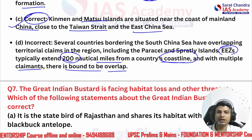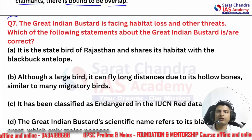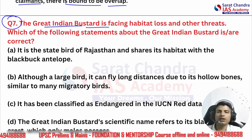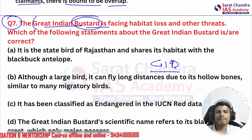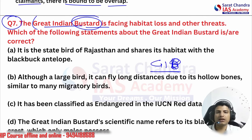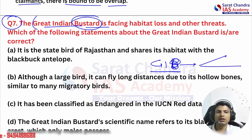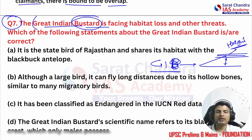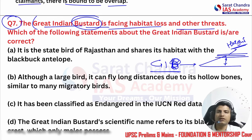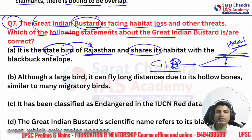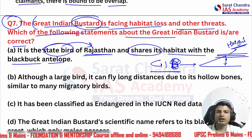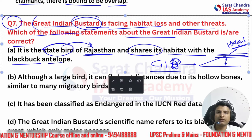Let's come to the seventh question: the Great Indian Bustard. There are multiple types of bustard in India. The GIB is one of the largest birds — it can fly but not at great height. This is the main issue because electric wires go at the same height. The question asks: which of the following statements about the GIB are correct, given that it faces habitat loss and other threats?